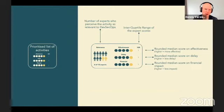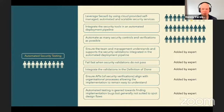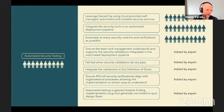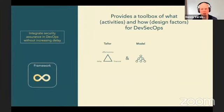The security activities mainly express the 'what' you can do in DevSecOps to improve security maturity. The second aspect I mentioned is design factors, which answer the question: how do we do these things differently in DevSecOps? For each of the identified activities, you will find in the research paper an overview of specific design factors where either the experts or academic literature indicated they were highly relevant and should be taken into account.